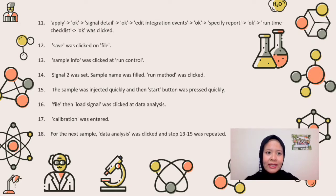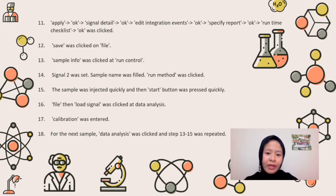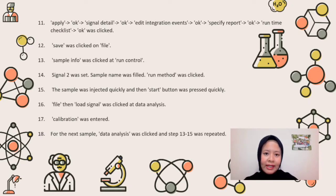Step 12: Save was clicked on file. Step 13: Sample info was clicked at run control. Step 14: Signal tool was set and sample name was filled in. Run method was clicked. Step 15: The sample was injected quickly and then the start button was pressed quickly on the instrument. The syringe was pulled out quickly from the inlet. Step 16: File and load signal were clicked at the data analysis. Step 17: Calibration was entered, new calibration table was clicked, the name was entered, and the document was printed.